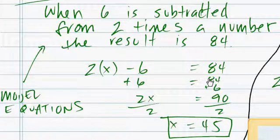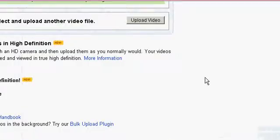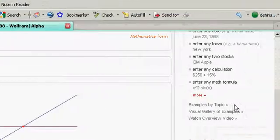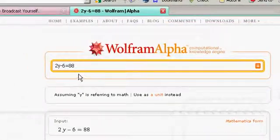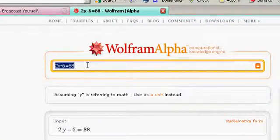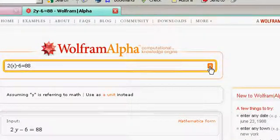Now let's take that number and put it into Wolfram Alpha to see what it does. And go to Wolfram Alpha, and we put in our calculation, or our equation. 2x minus 6 equals 88. We hit the equal sign. Wolfram Alpha does its magic.